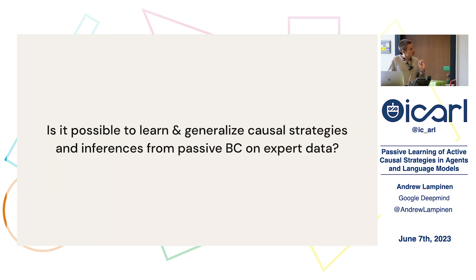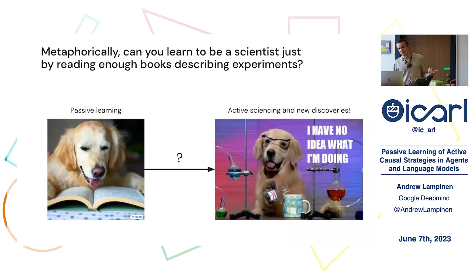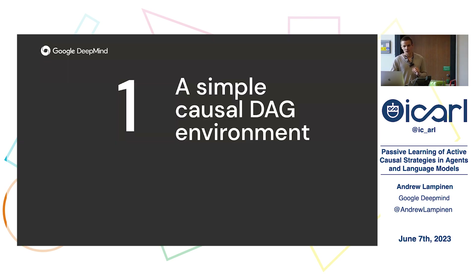That's the question I tried to explore in this work: is it possible to learn and generalize causal strategies and inferences just from doing passive behavioral cloning on expert data? Or to make it more metaphorical: could you learn to be a scientist just by reading enough books describing experiments and their outcomes, and then use that knowledge to go out and make new scientific discoveries?